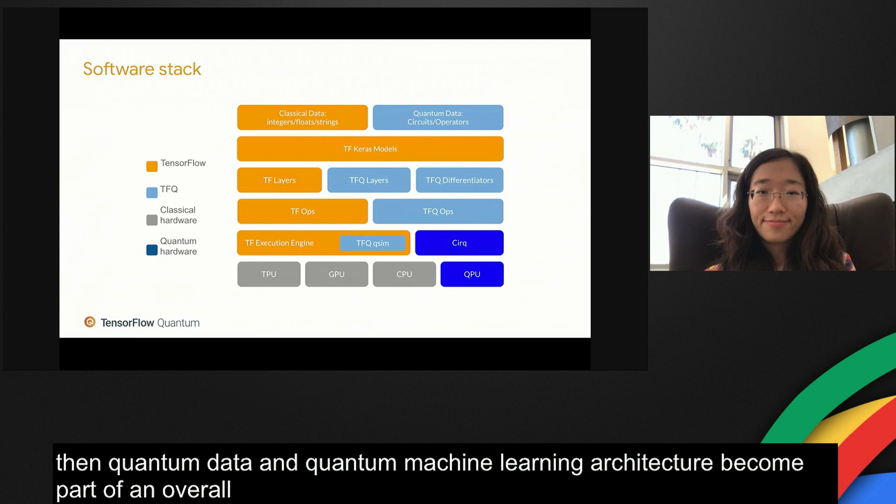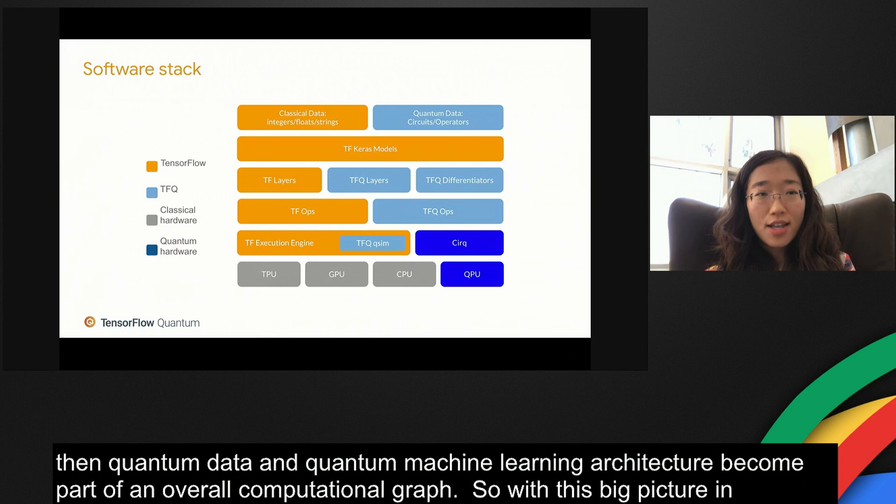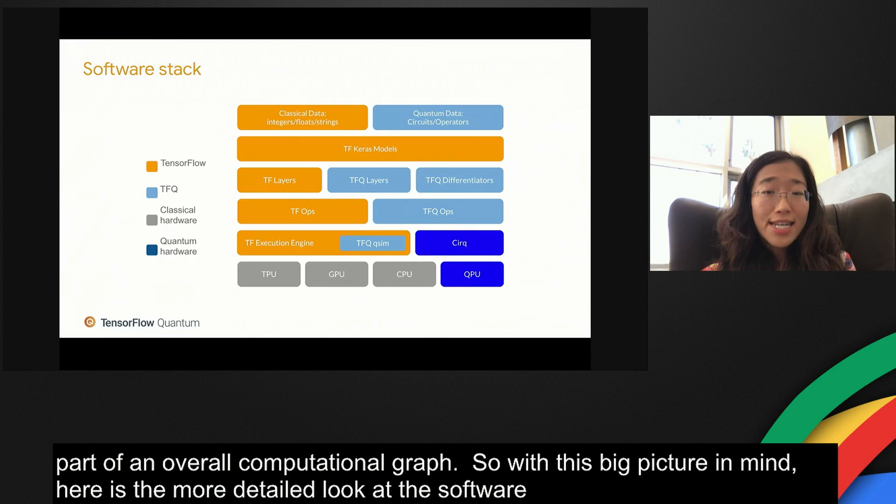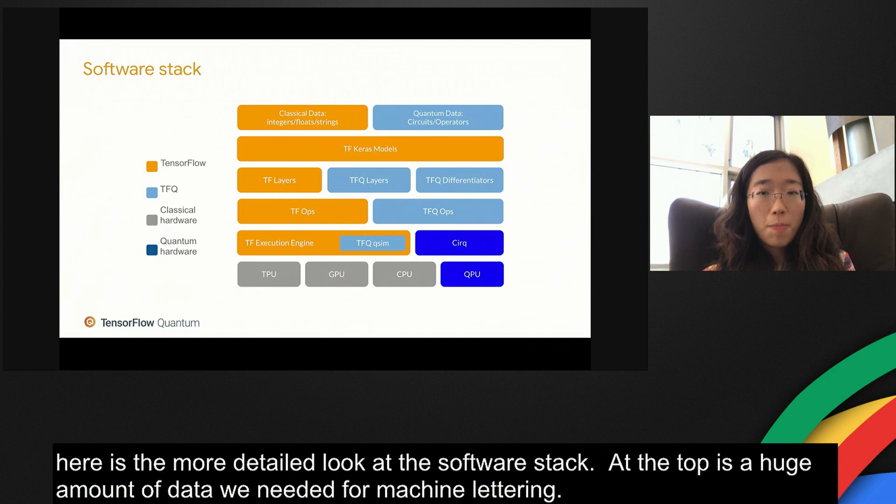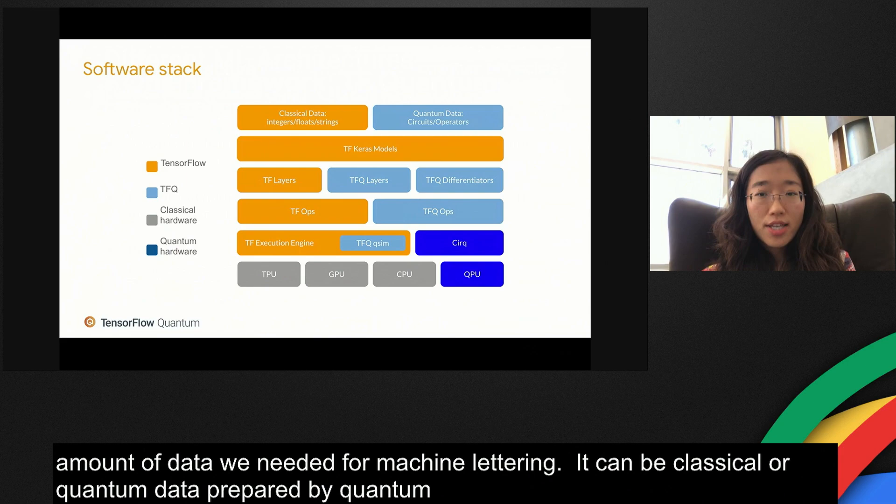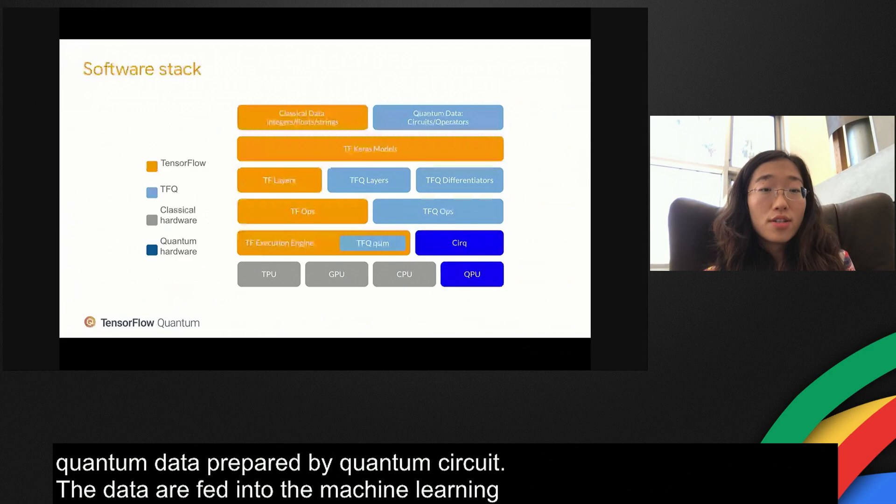With this big picture in mind, here is a more detailed look at the software stack. At the top is the humongous amount of data we needed for machine learning. It can be classical or quantum data prepared by a quantum circuit. The data are fed into the machine learning architecture, including both traditional TensorFlow layers and the new quantum layers provided by TFQ through Keras models.